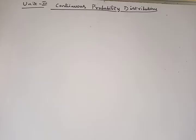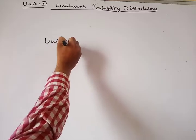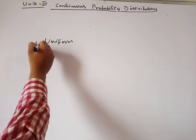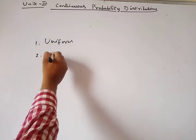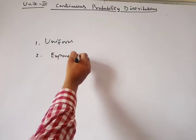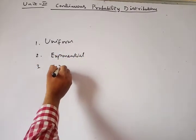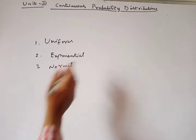Unit 3 is Continuous Probability Distribution. The main topics we have are: uniform distribution, exponential distribution, and normal distribution.